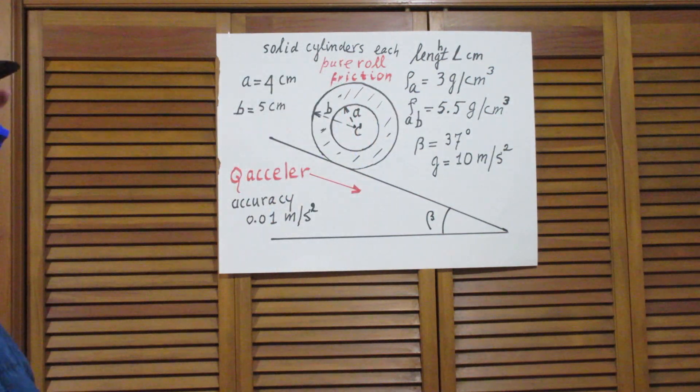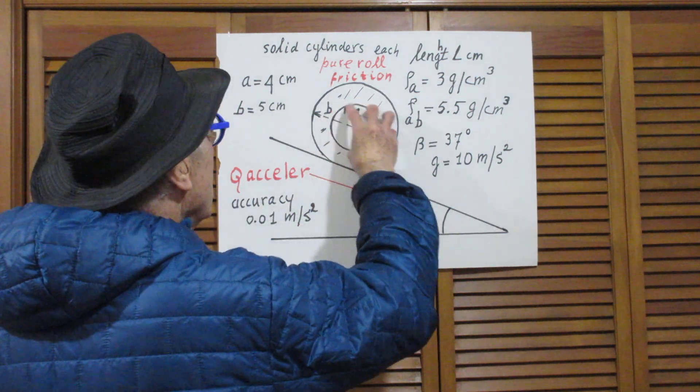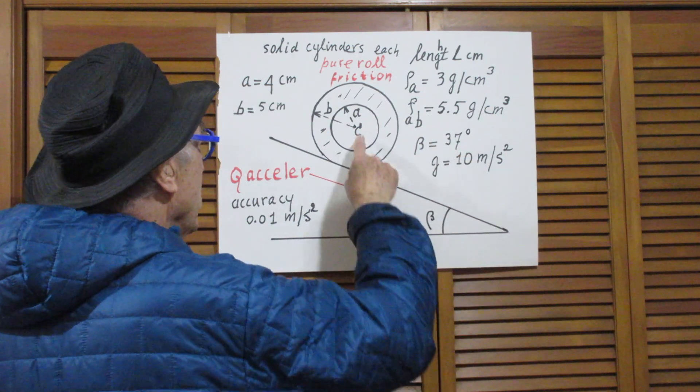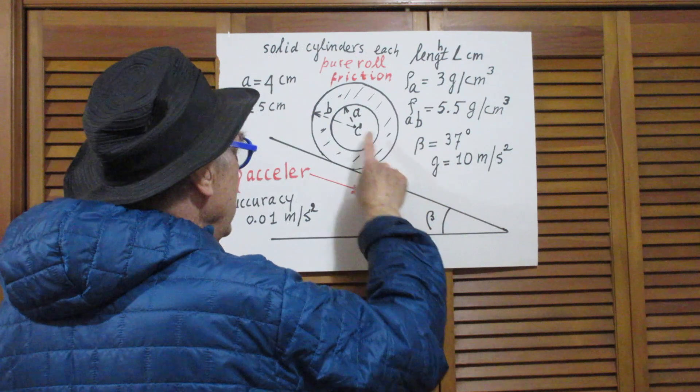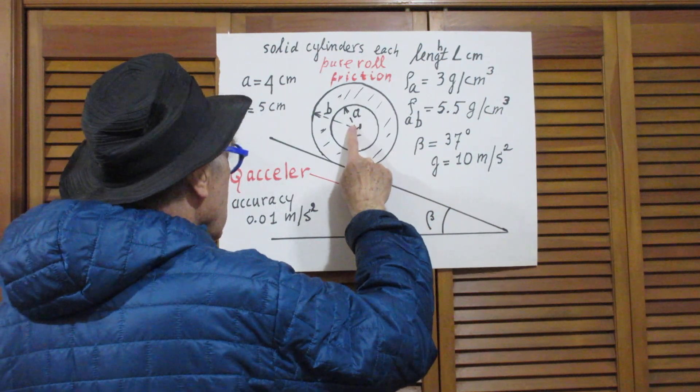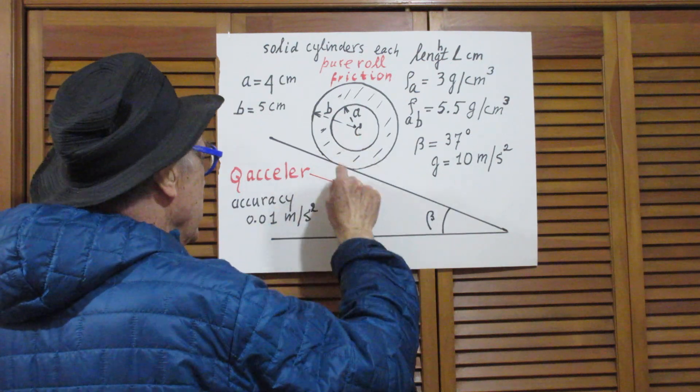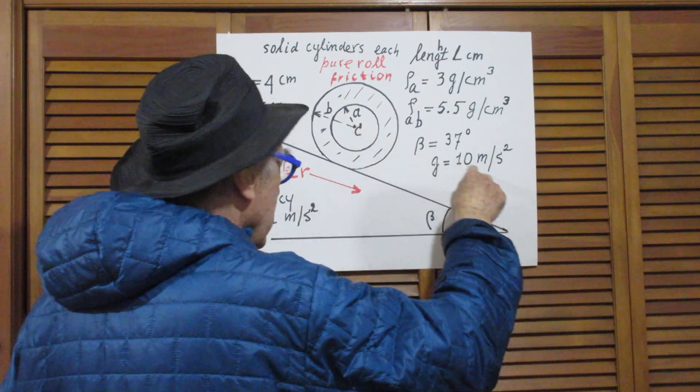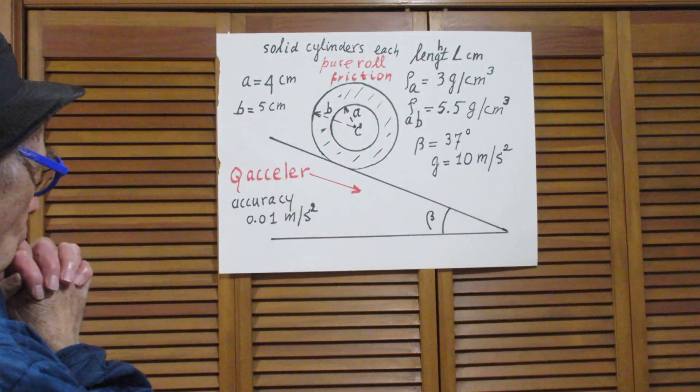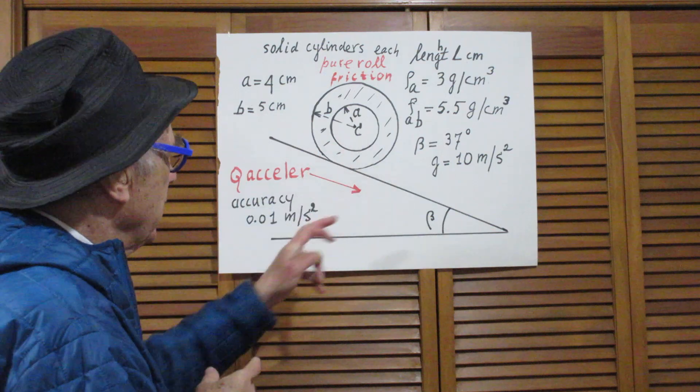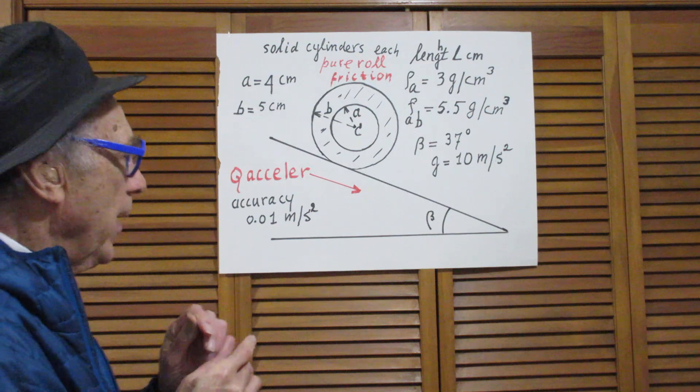And now the question is: what is the acceleration by which this object will roll down? In other words, what is the acceleration down the incline of the center of the cylinder? I call that c - it's going to go down this way. And I want the answer to an accuracy of 0.01 meters per second squared.